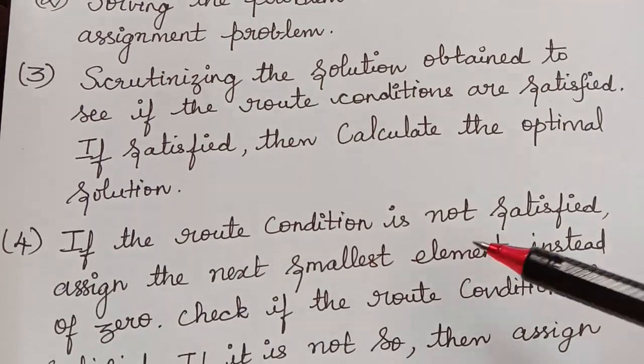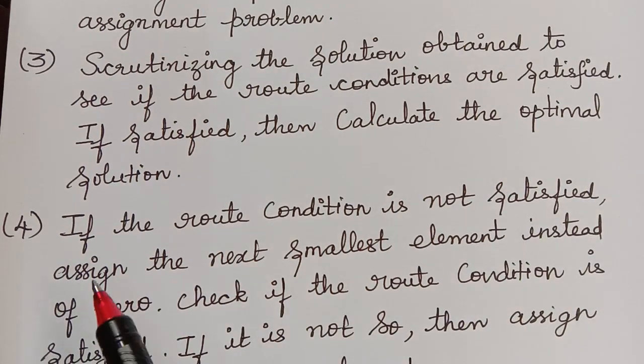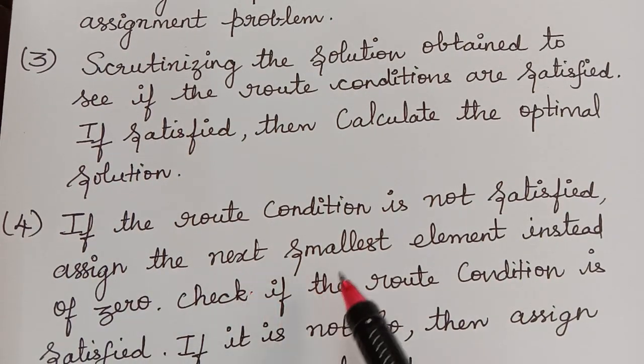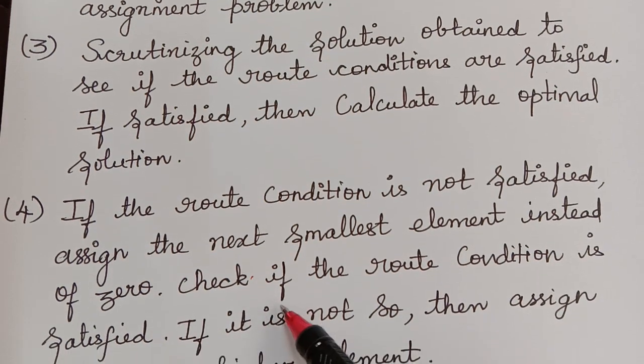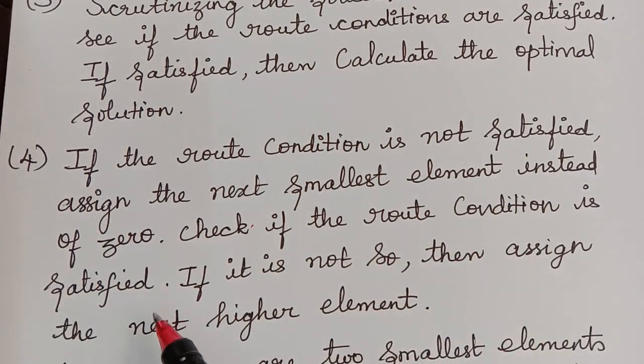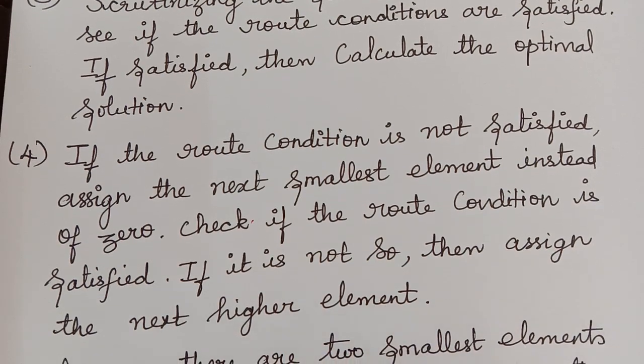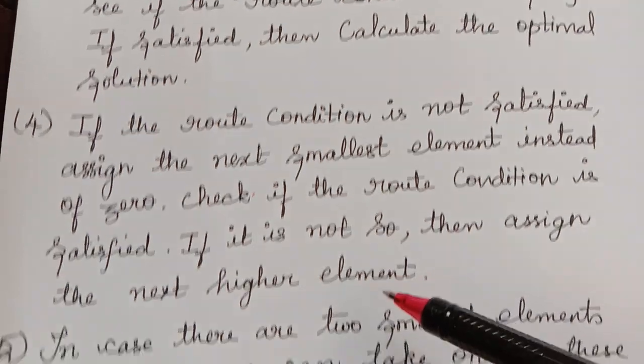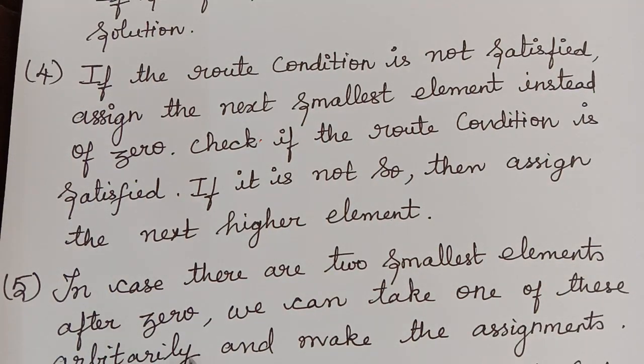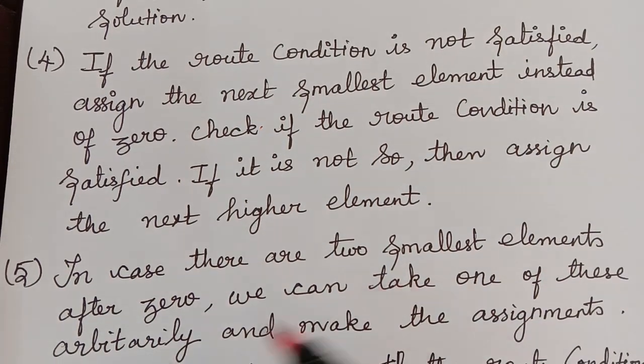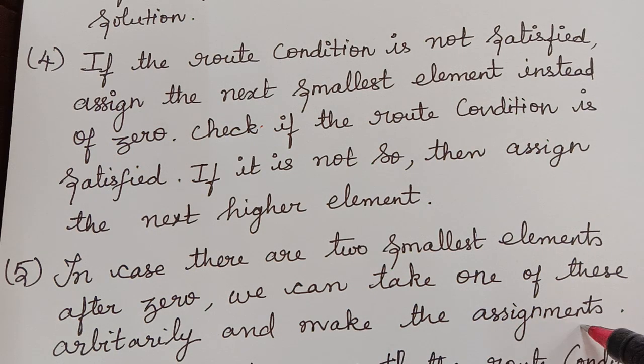If the route condition is not satisfied then we have to assign the next smallest element instead of zero. That is, check if the route condition is satisfied again. If it is not so then assign the next higher element. In case there are two smallest elements after zero, we can take one of these arbitrarily and make the assignments.